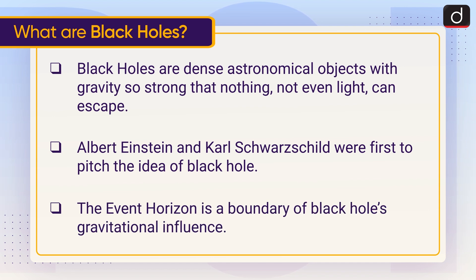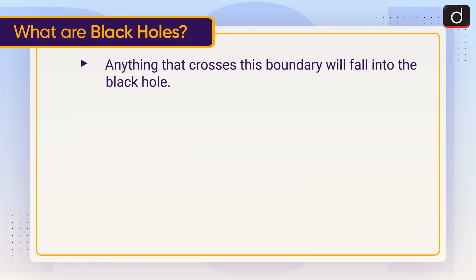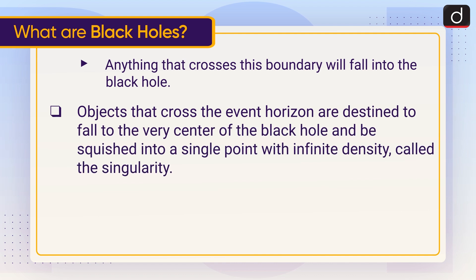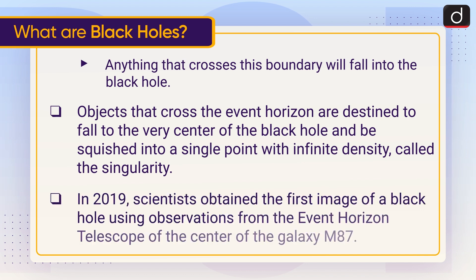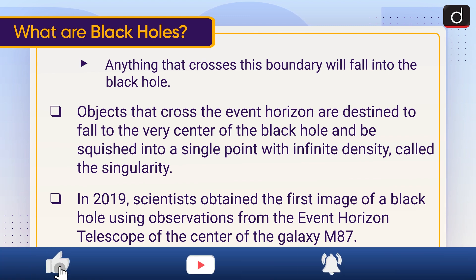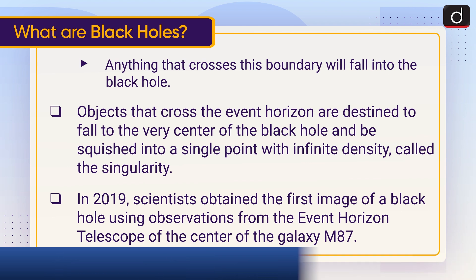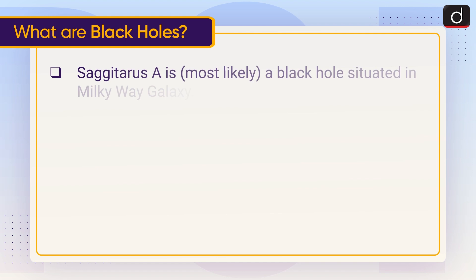Anything that crosses the event horizon will fall into the black hole. Objects that cross the event horizon are destined to fall to the very center of the black hole and be squished into a single point with infinite density, called the singularity. In 2019, scientists obtained the first image of a black hole using observations from the Event Horizon Telescope of the center of galaxy M87. Sagittarius A* is most likely a black hole situated in the Milky Way galaxy.